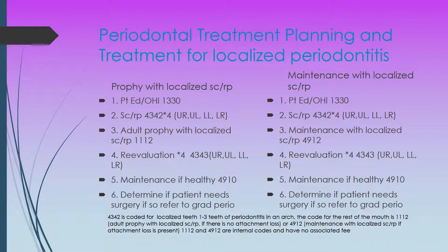Now let's look at the treatment for localized periodontitis — a prophy with localized scaling and root planing. The treatment plan includes: patient education and oral hygiene instruction — code 1330; then scaling and root planing. Note that instead of 4341, which is four or more teeth in a quadrant, you now have code 4342, which is one to three teeth in a quadrant. Even one tooth in a quadrant can give you the 4342 that you may need to use.